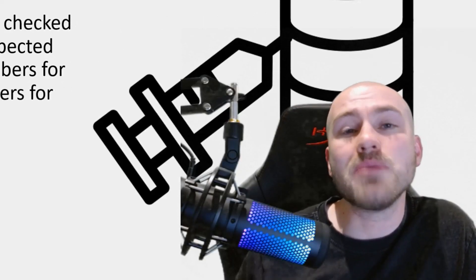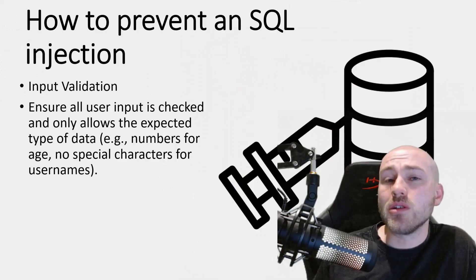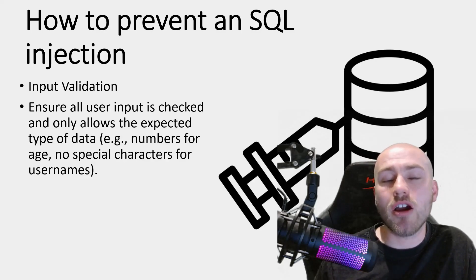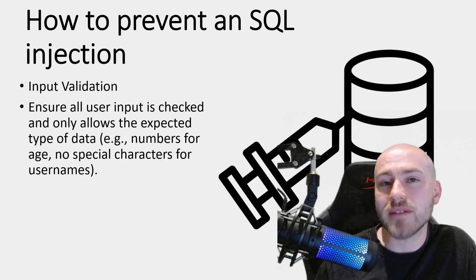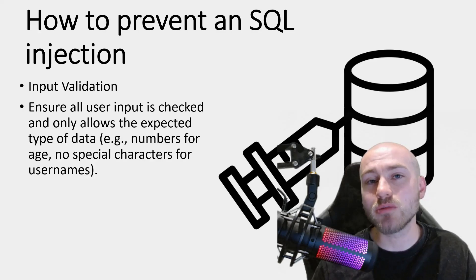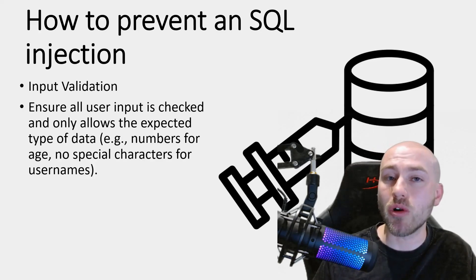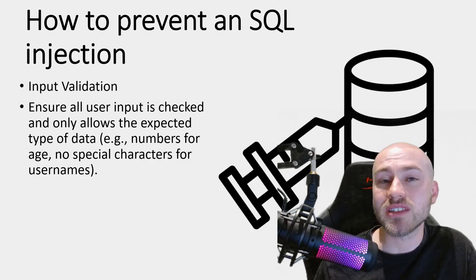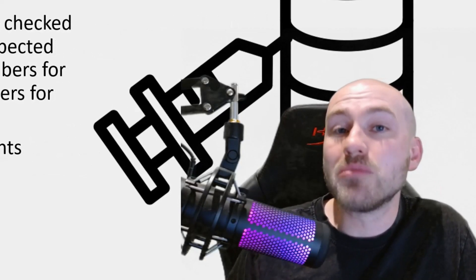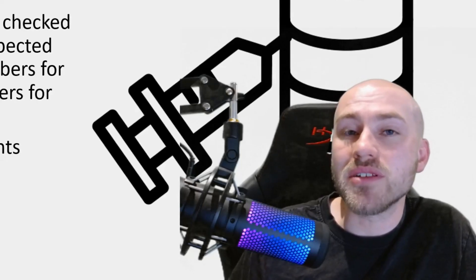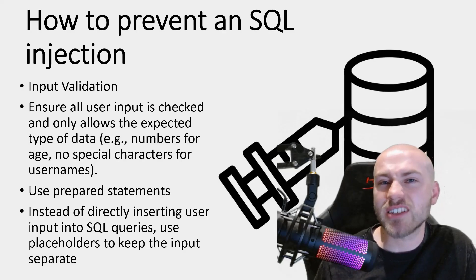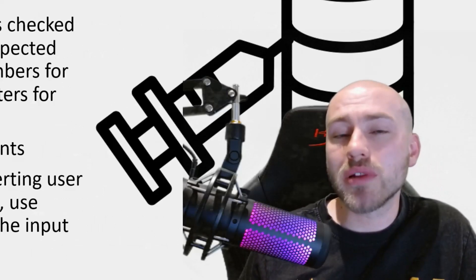Input validation can apply to the type of data entered. For example, if someone is asked to enter their age, they might only be allowed to enter an integer. Even better, a drop-down calendar could be used to select a date of birth, so the user can't type anything into that field at all. Another method is using a prepared statement — rather than a user typing into a search bar, a placeholder like a drop-down menu is used instead.